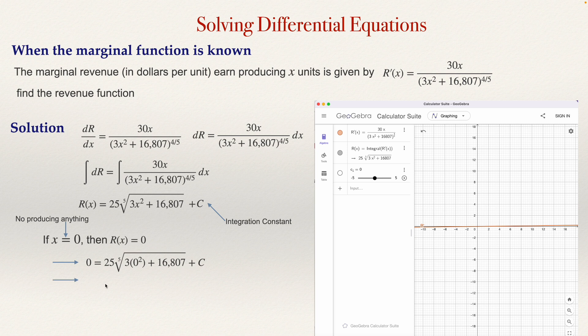This will be 25 multiplied by the fifth root of 16,807. You can use your calculator and notice that this is 7. The fifth root of 16,807 is 7. So it's just 25 times 7, that is 175. So c equals negative 175.